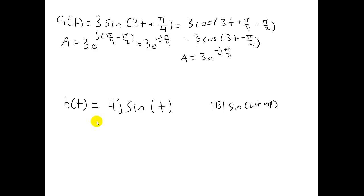So I can rewrite this as 4e to the j pi over 2 sine of t. I can then absorb this phase here into the sine expression.